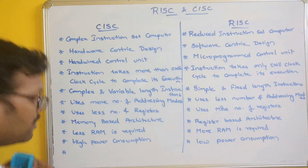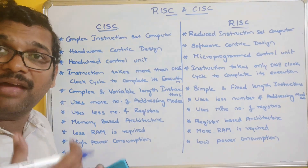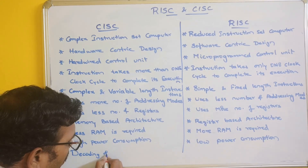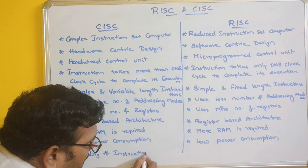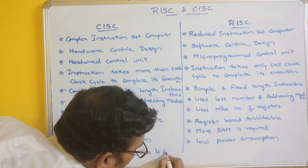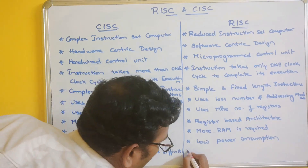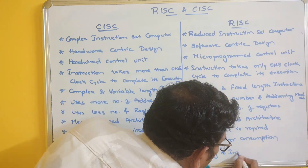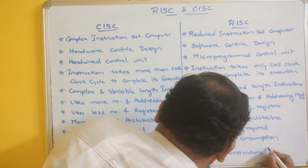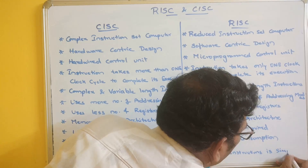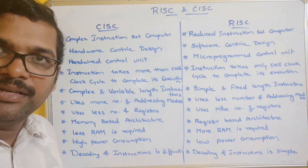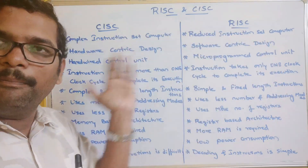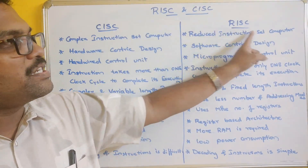In CISC, the decoding of instructions is difficult because one instruction will be having multiple operations. So decoding of instructions is difficult. In RISC, decoding becomes simple and easy. These are the differences between the CISC architecture and the RISC architecture — Complex Instruction Set Computer and Reduced Instruction Set Computer.